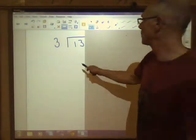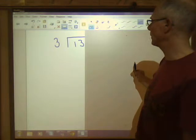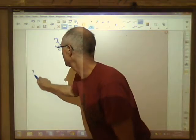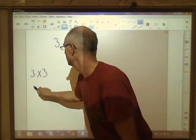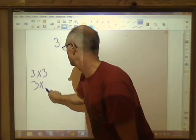Now, 3 goes into 13 how many times? Well, 3 x 3 = 9, 3 x 4 = 12.